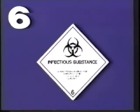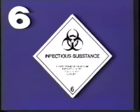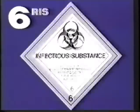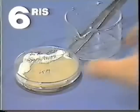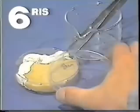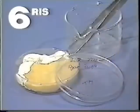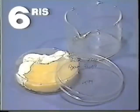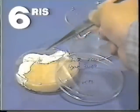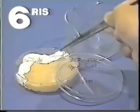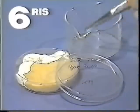Infectious substances belong to subclass 6.2. These are microorganisms or, in this case, bacterial cultures for research. Infection is possible on contact.